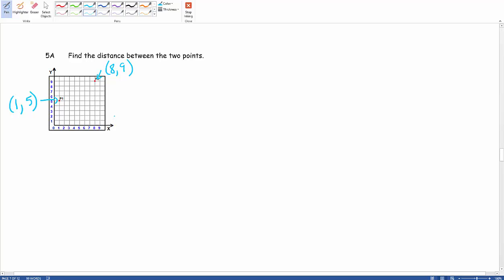So again, with all of these distance problems, we're always going to first label them. Next, we have to dig out our distance formula. The distance formula is d equals the square root of (x2 minus x1) squared plus (y2 minus y1) squared.